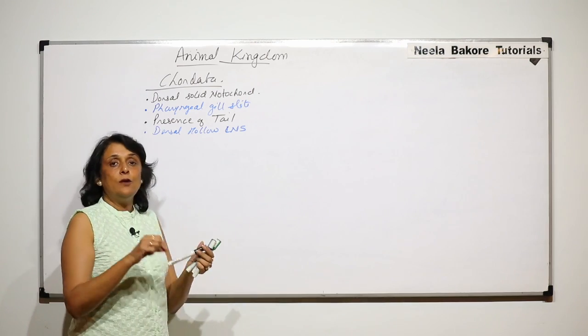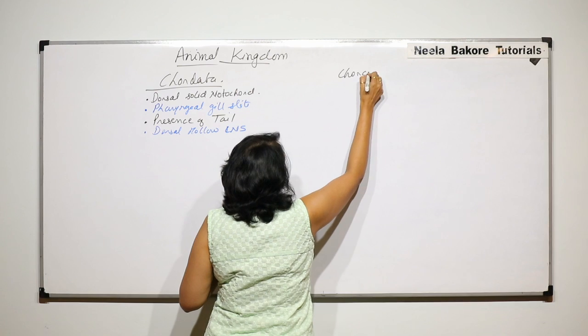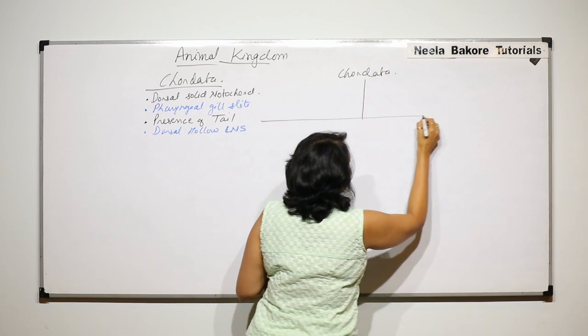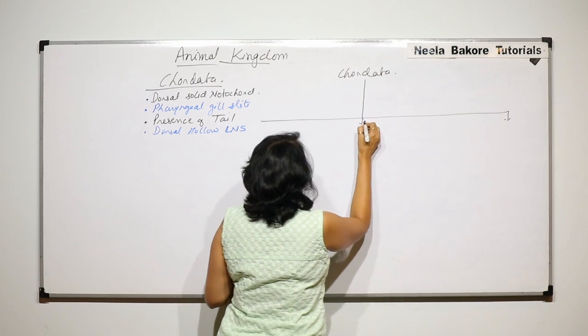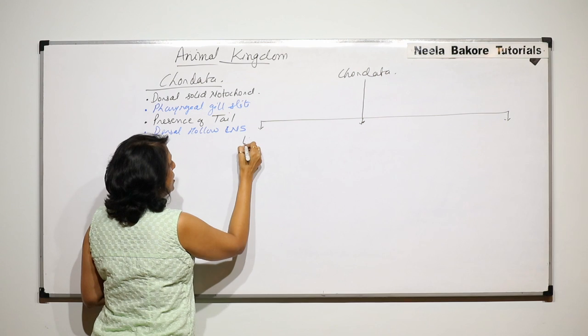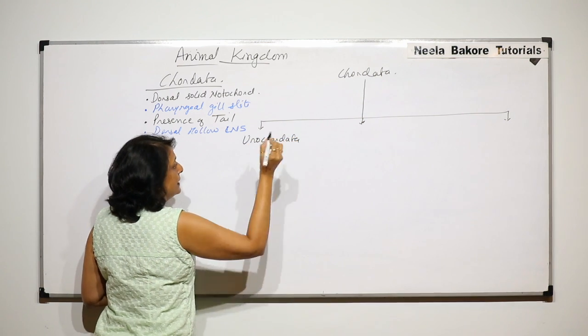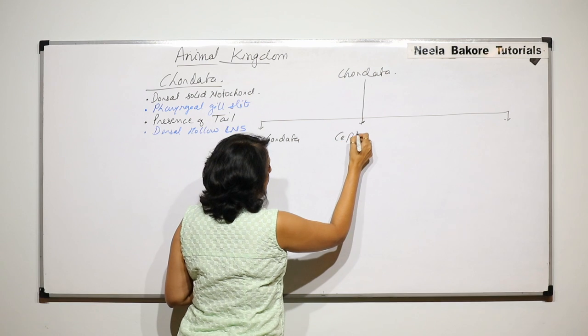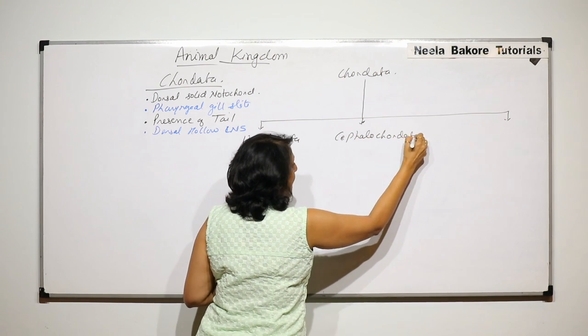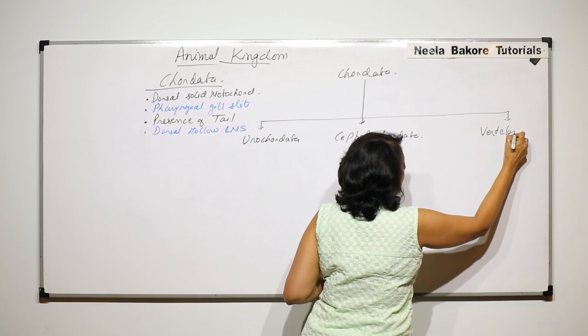Now we are trying to classify this phylum Chordata. If we classify this we get three subphyla. The first one is Urochordata, then Cephalochordata, and the last is Vertebrata.